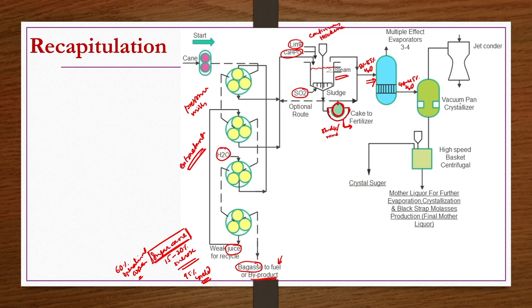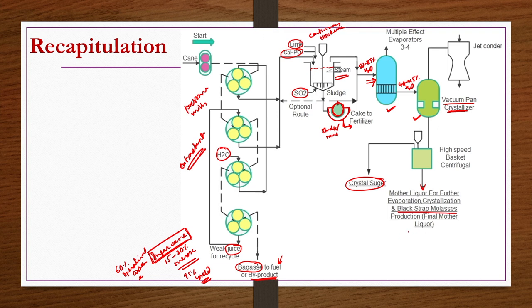After passing through the multiple-effect evaporator, water content reduces to 40 to 45 percent. Further thickening takes place in vacuum pan crystallizers where crystallization also occurs. These crystals may contain some syrup as trash liquid. To remove this syrup, the high-concentrated mass from the pan is sent to a high-speed centrifugal basket. Sugar crystals recovered are almost free from molasses or other impurities.